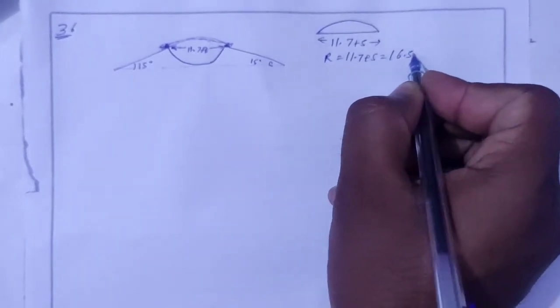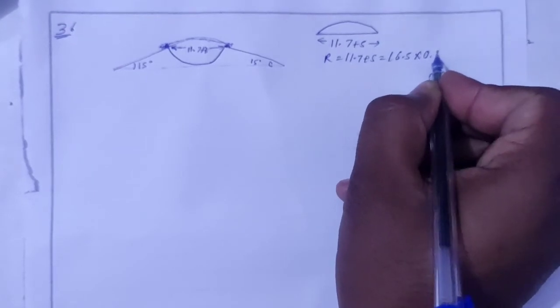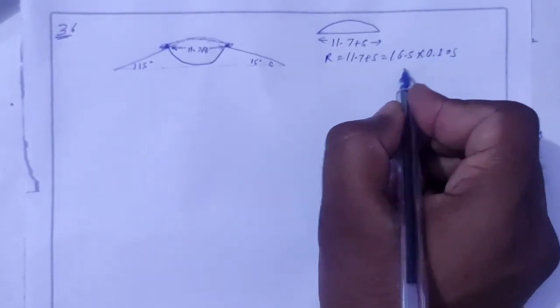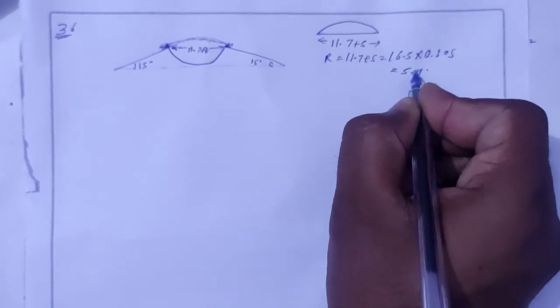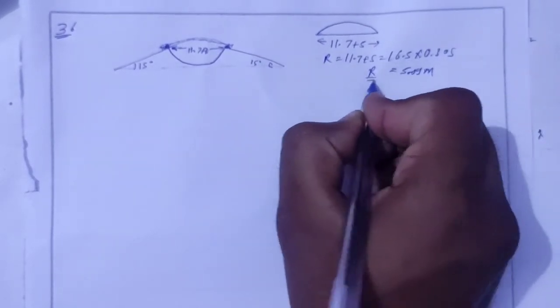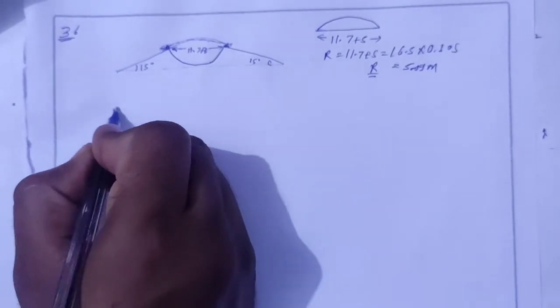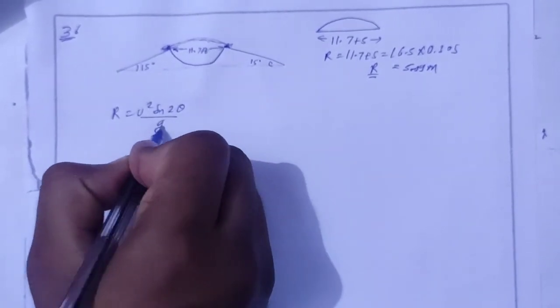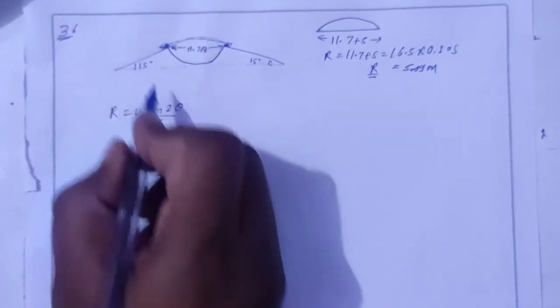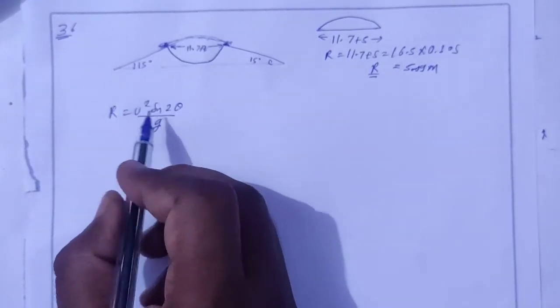16.7 feet. To convert to meters, multiply by 0.305, which gives 5.09 meters as the range. The range formula is u squared sin 2 theta by g. The angle of projection is 15 degrees and we need to find the speed.